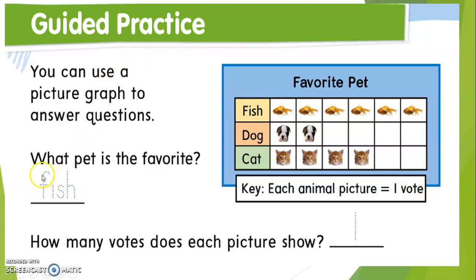You can use a picture graph to answer questions. The first question says: what pet is the favorite? The favorite means which one had the highest votes. We come back to the pictures and see which has the largest number: the cat has four, the dog has two, and the fish has six.